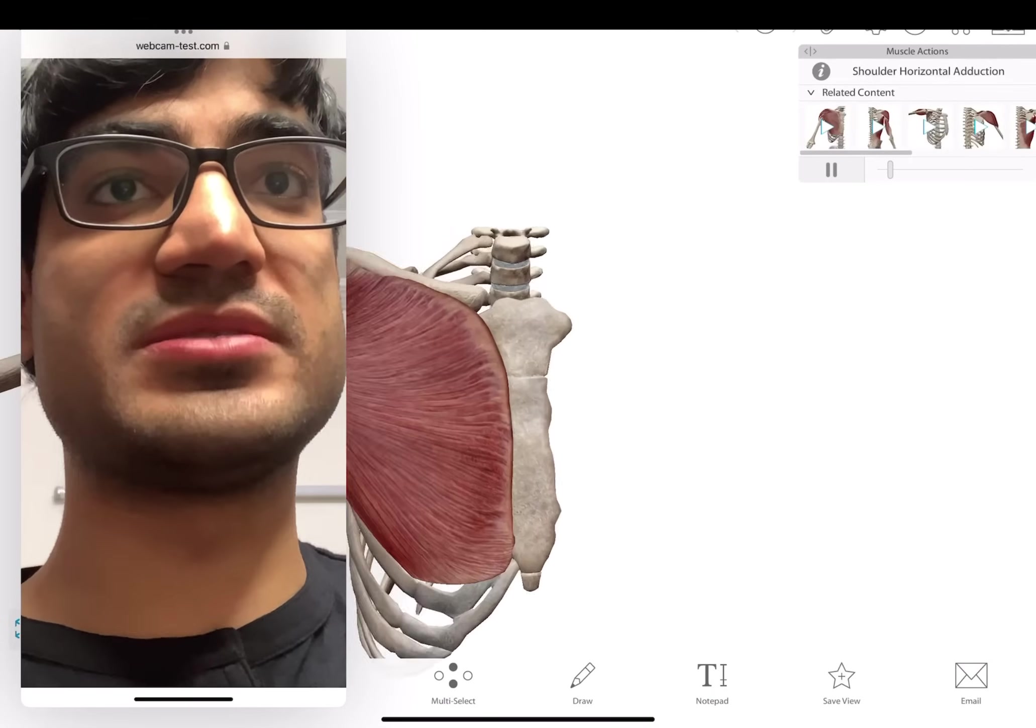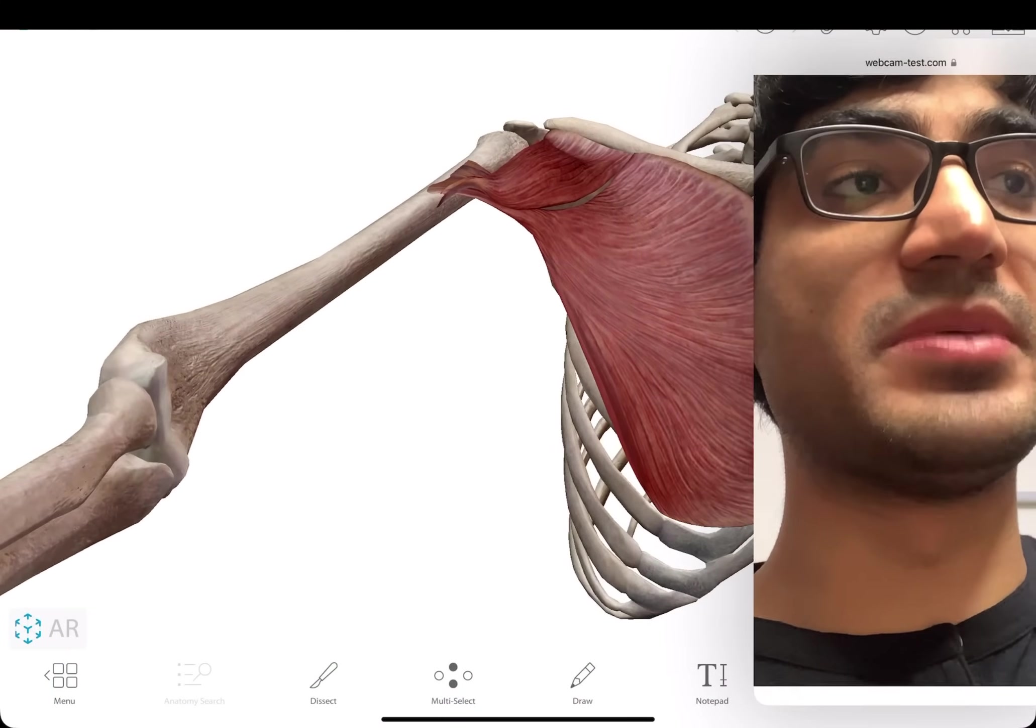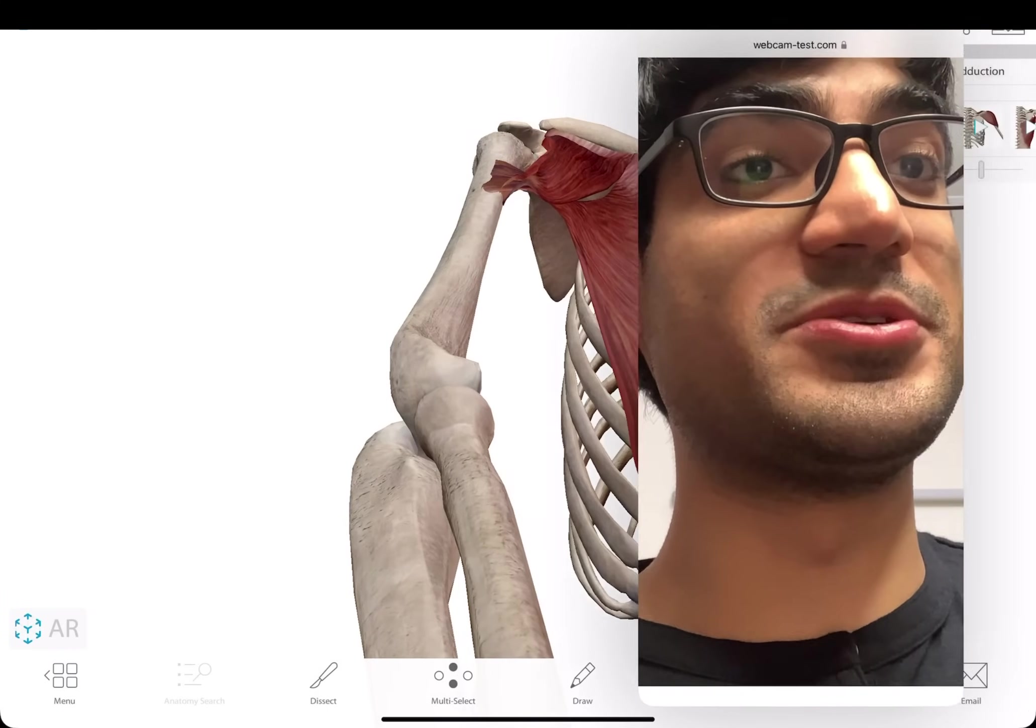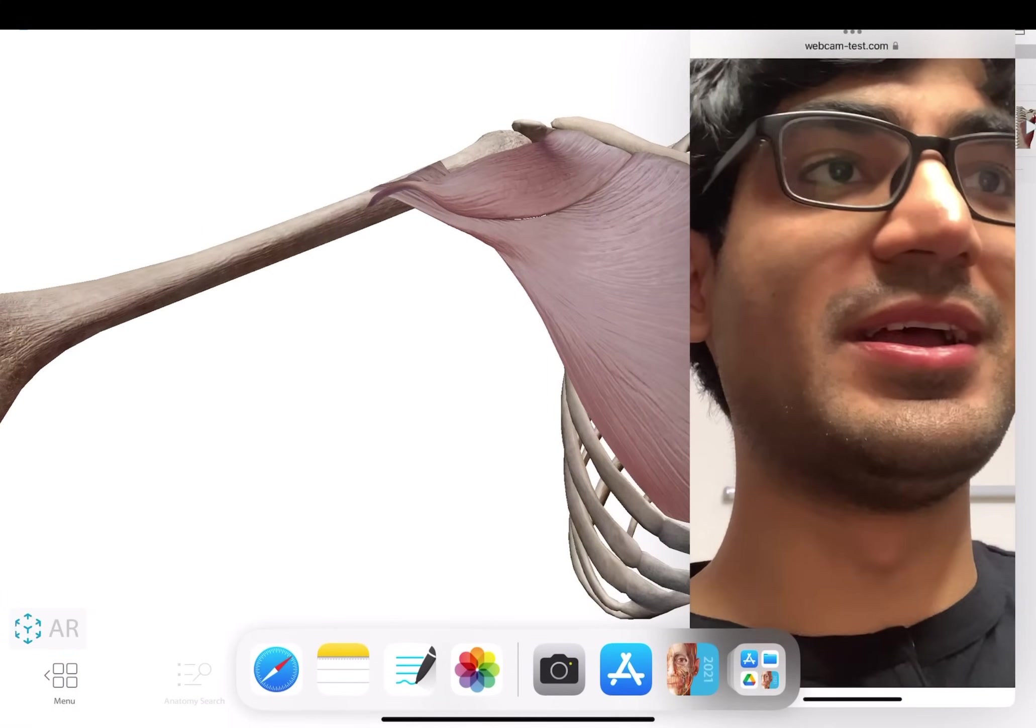Let's say you want to see how does adduction come into play? What muscles? Pectoralis, you can see the pectoralis muscle doing adduction. So that again is a game changer, I think.